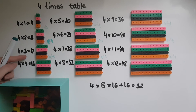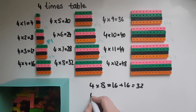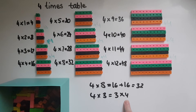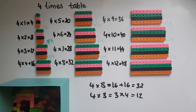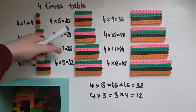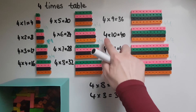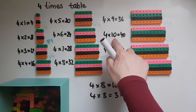Another thing to remember is that four times three, for example, is the same as three times four. So if you find it easier to work out three times four, just work it out and you'll get the same answer. Four times seven is the same as seven times four, and four times ten is the same as ten times four.